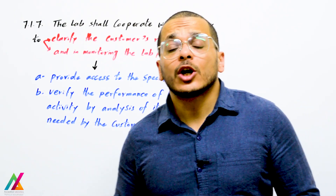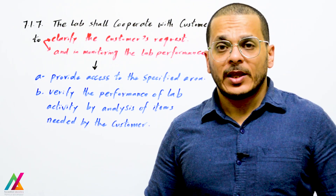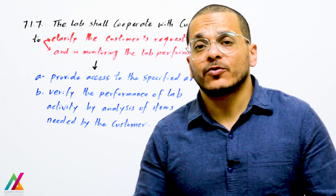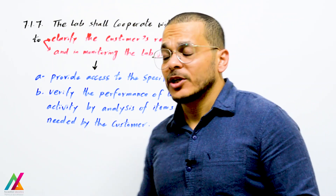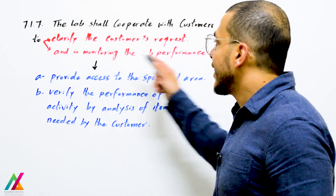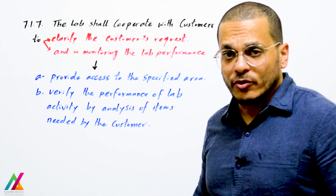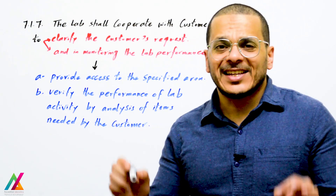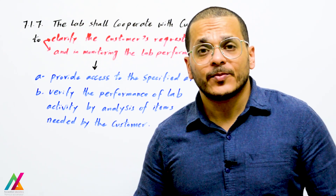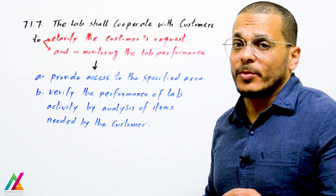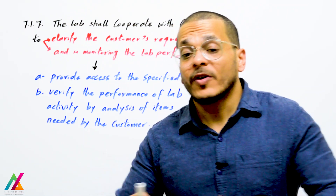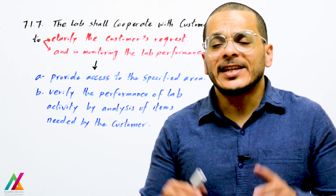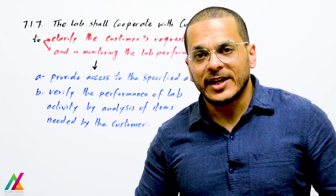Regarding communication between the lab and the customer: the customer has all rights to verify the performance of their lab activity and to observe it. This also provides confidence to the customer about the lab. The lab shall cooperate with the customer to clarify requests and to monitor the performance of the lab activity. The lab shall provide the customer access to the specified area for their lab activity and allow verification of performance by analysis of items needed by the customer, all within the system.